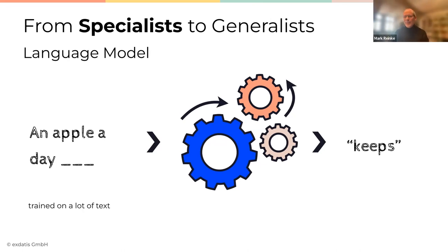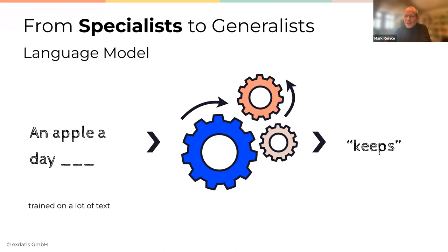Here's another example of a specialist model — a language model that deals with text. You know this type of model from your phone: when you write an SMS, the phone might suggest the next word. This is a language model trained on text that learns how to predict the next word by seeing a lot of text and how sentences are composed. This is a very powerful type of model — you can do lots of great things with it — but again it's limited in that it can only deal with text.